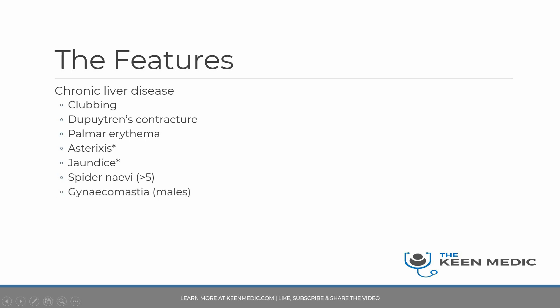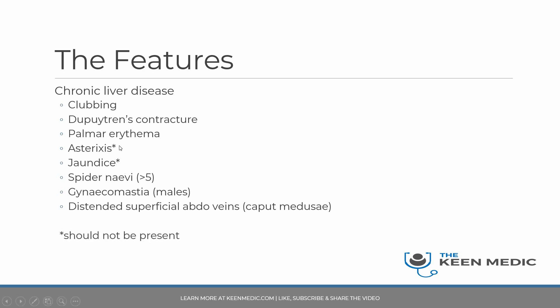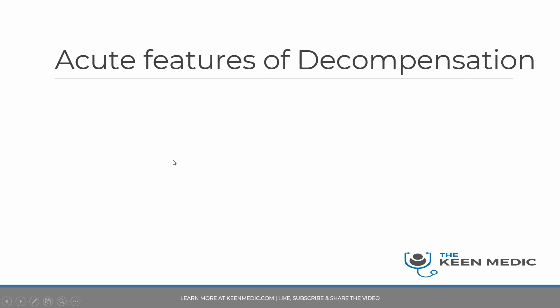Gynecomastia — in males, you should palpate under the male nipple if you think this is a liver patient. If it is a female, don't do that because this is irrelevant. Distended superficial abdominal veins, otherwise known as caput medusae — the asterisks here mean that they should not be present in your patient in PACES, because these suggest that the patient has got decompensation, which is the next thing I want to talk about.